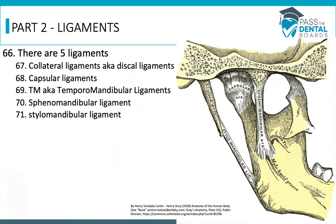We're picking up from where we left off in the last lecture, and we're going to start this one off with the ligaments. There are five ligaments we have to keep track of: the collateral ligament, also known as the discal ligament; the capsular ligament; the TM, also known as the temporomandibular ligament; the sphenomandibular ligament; and the stylomandibular ligament.